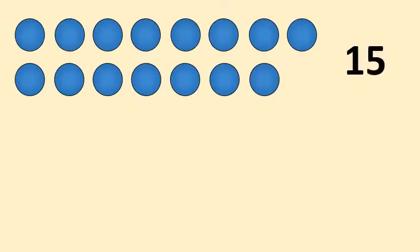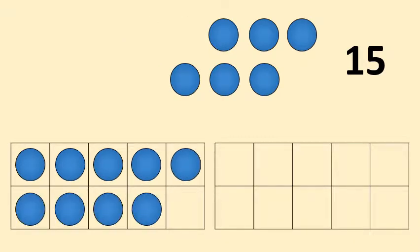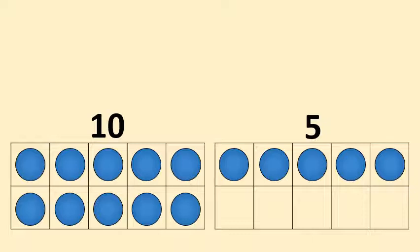If we arrange 15 counters into 2 boxes of 10, it will look like this. One box of 10 will be full and there will be 5 left over in the other box. So we can see that 15 is 10 and 5.